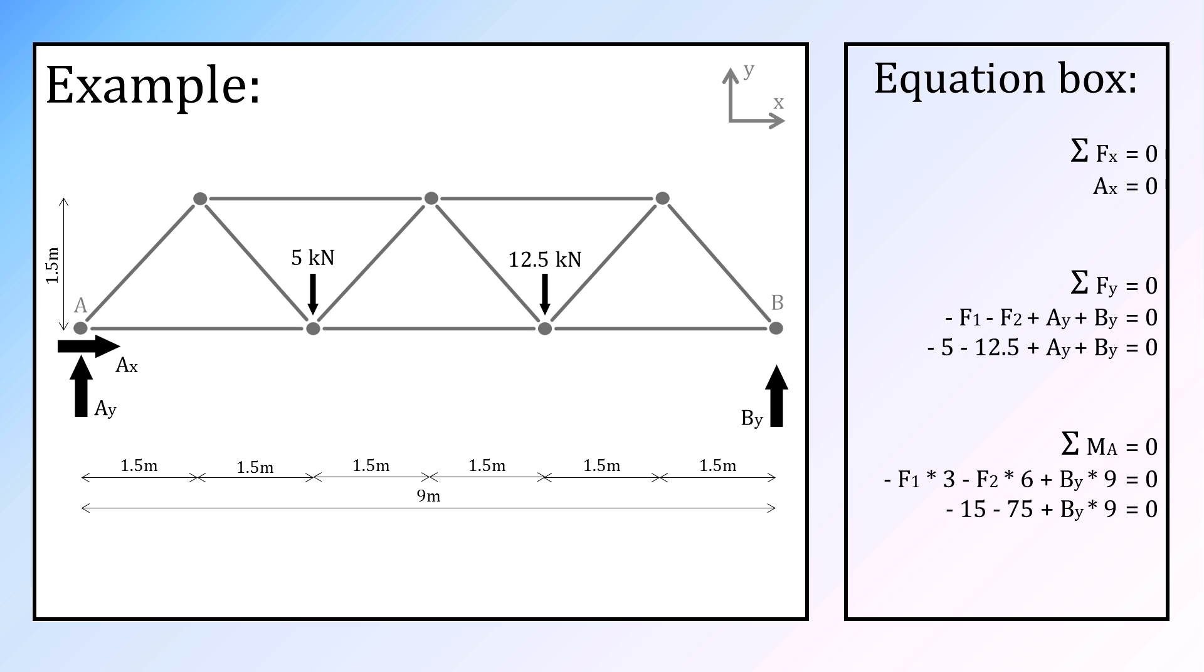Using and expanding the three equations, the forces at both shores can be calculated. The only solution to these formulas combined are a vertical force of 7.5 kN and no horizontal force at side A, combined with a vertical force of 10 kN at side B.